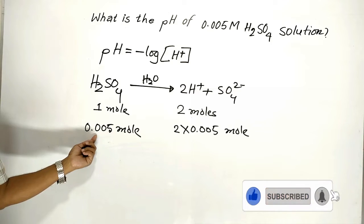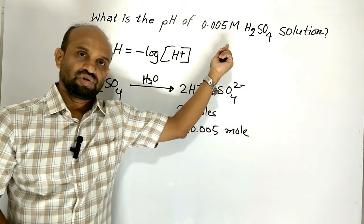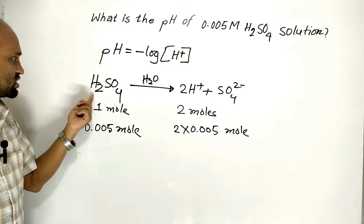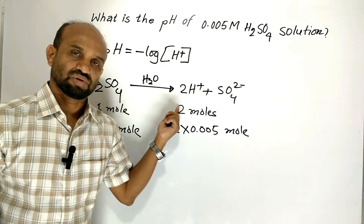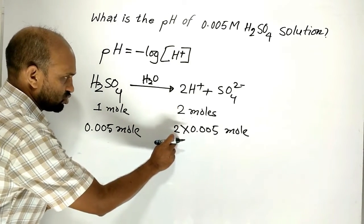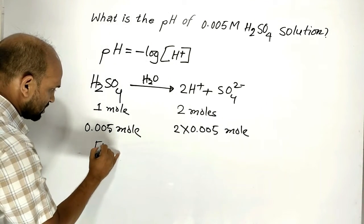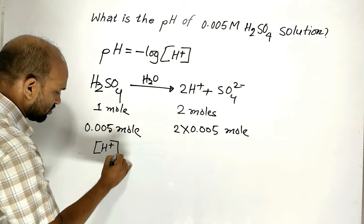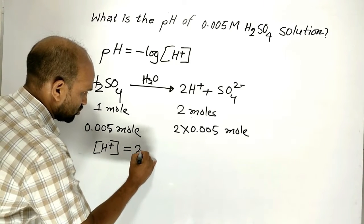The concentration of proton is double the concentration of sulfuric acid because one mole sulfuric acid produces two moles of protons. That is why the concentration of proton will be 2×0.005.